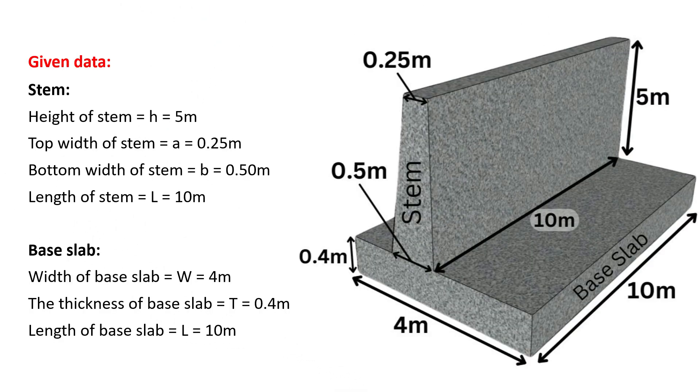Let's start with the given data of the retaining wall for which we are going to calculate the concrete volume. The height of stem is given as 5 meters. The top width of stem is 0.25 meters. Bottom width of stem is 0.5 meters and length of stem is 10 meters. The base slab has a width of 4 meters. Its thickness is 0.4 meters and the length of base slab will be equal to the length of stem, that's 10 meters.